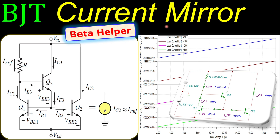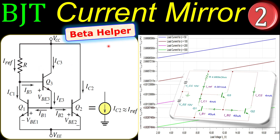Welcome back to a new video about current sources using BJTs. This is the second example, and we will follow up on the first example by adding another transistor which will be a beta helper. We will see why it is called a beta helper and why this current mirror configuration is better than the usual simple two-transistor BJT current mirror.